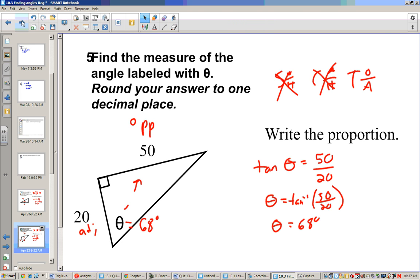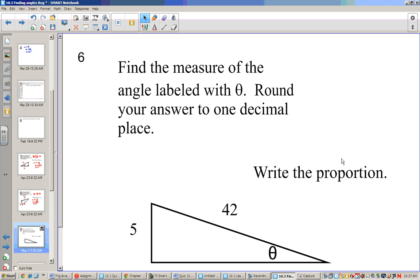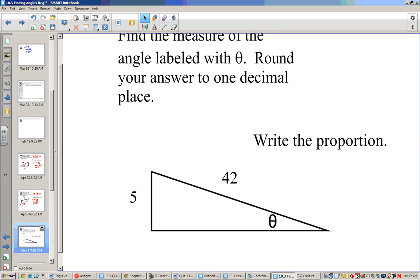All right. Let's try another one. Again, we want to write our proportion first. From our angle, 5 is our opposite side. Our hypotenuse is 42. Opposite over hypotenuse is sine. So I'll write sine of theta is equal to 5 over 42.